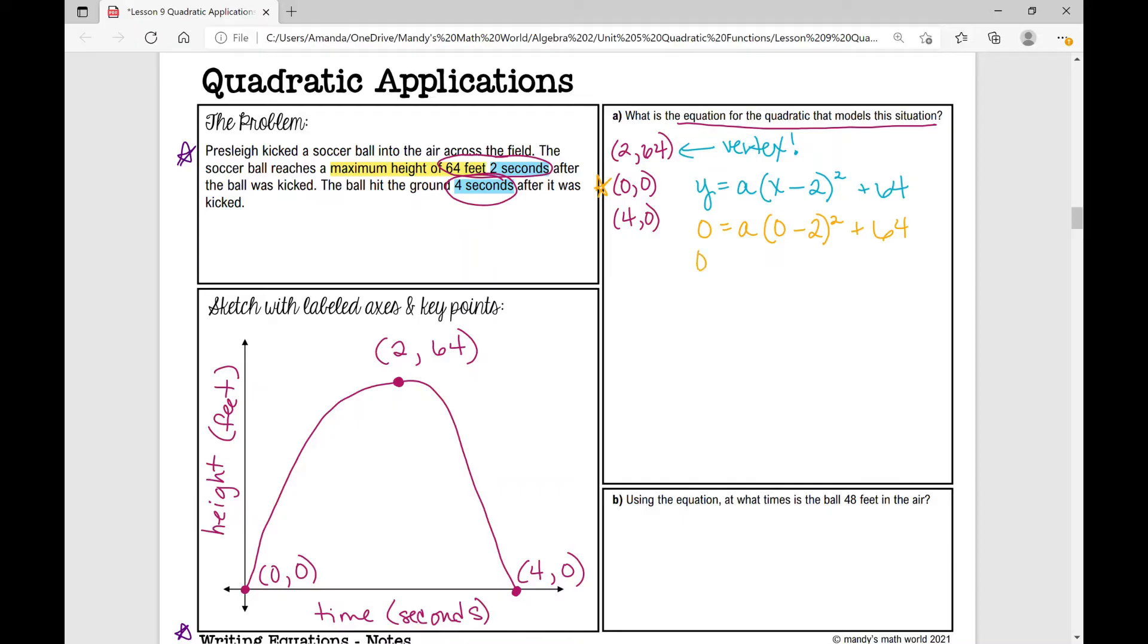And then we're just going to work this out and solve for a. So zero equals, the first thing I'm going to do is zero minus two, which is negative two squared, and then plus 64. And what I can do when I am solving this, I'm going to kind of condense some steps in here. I'm solving for a.